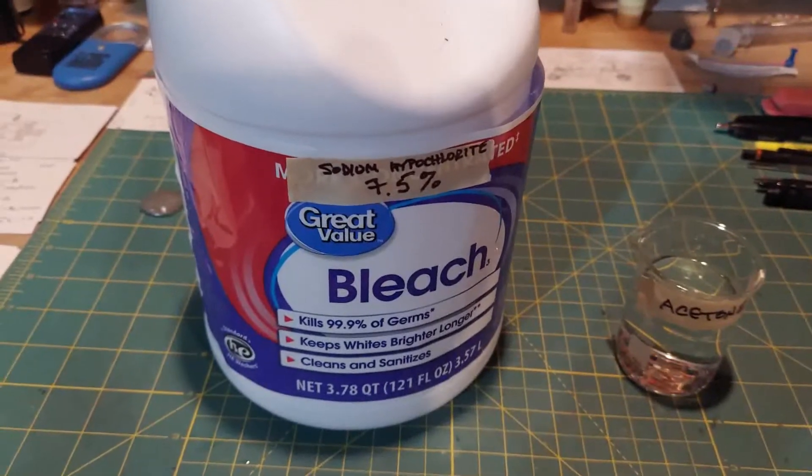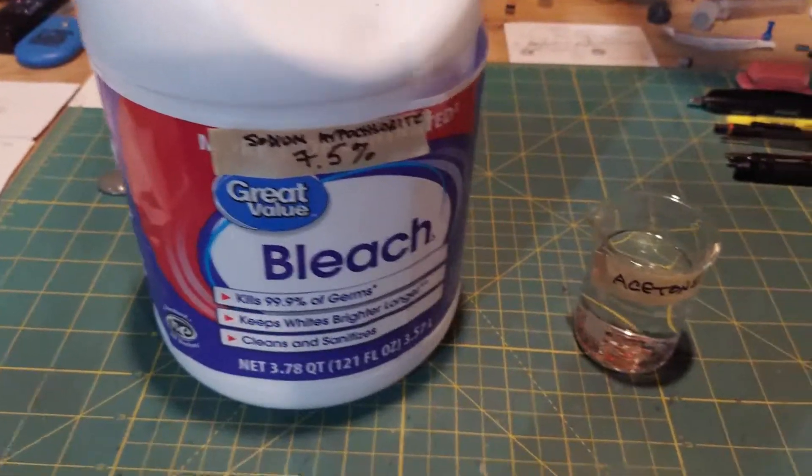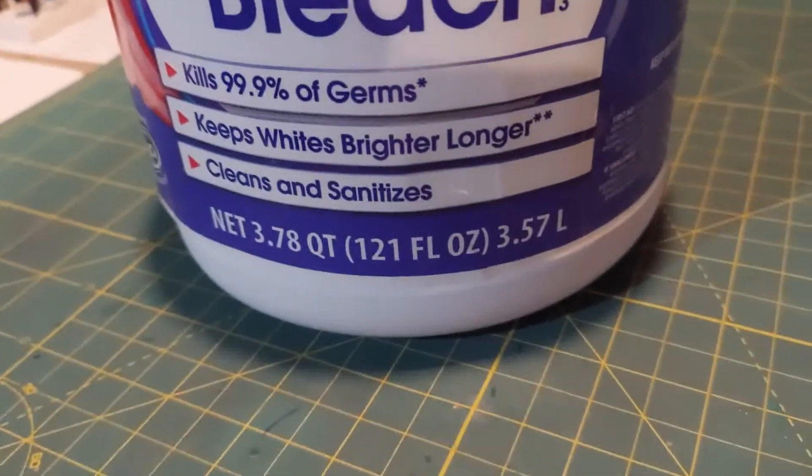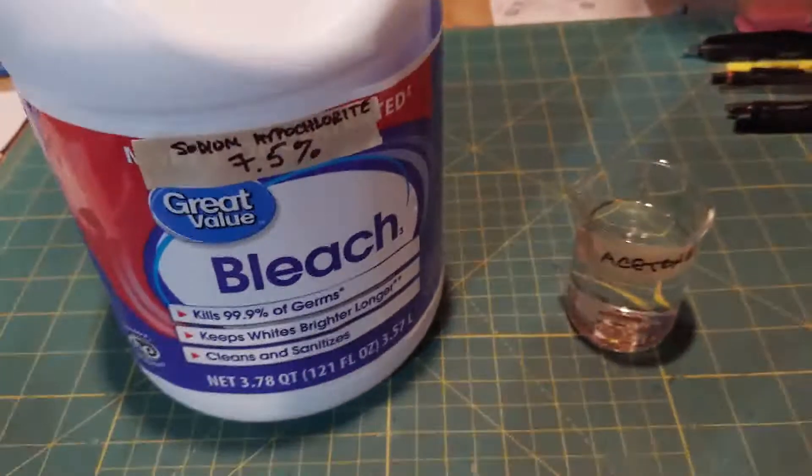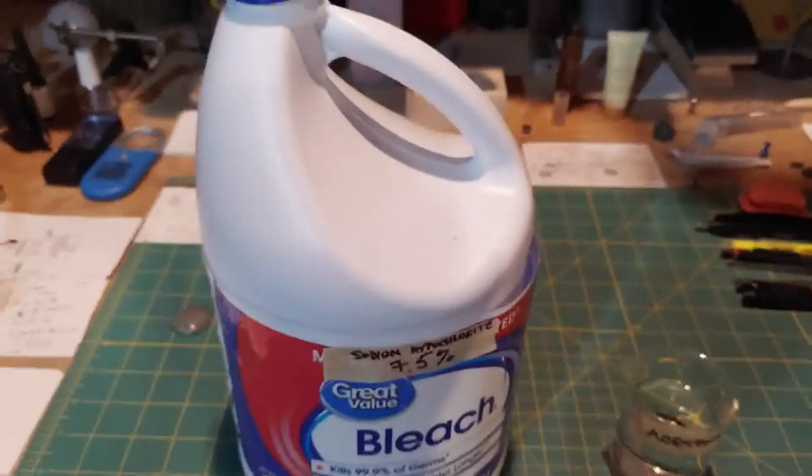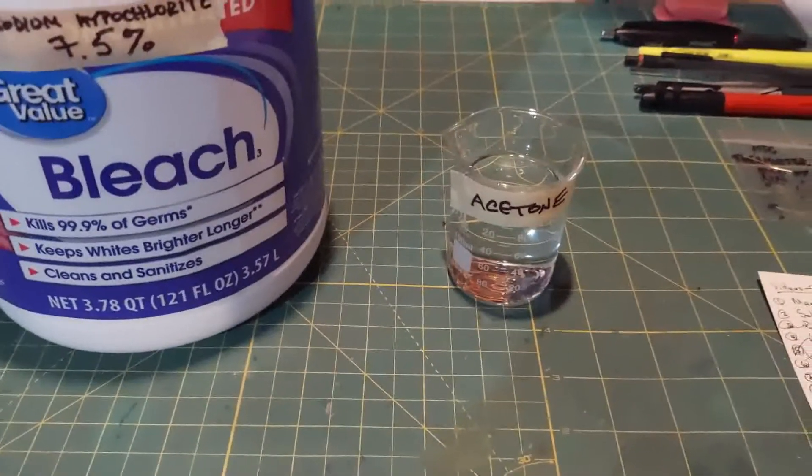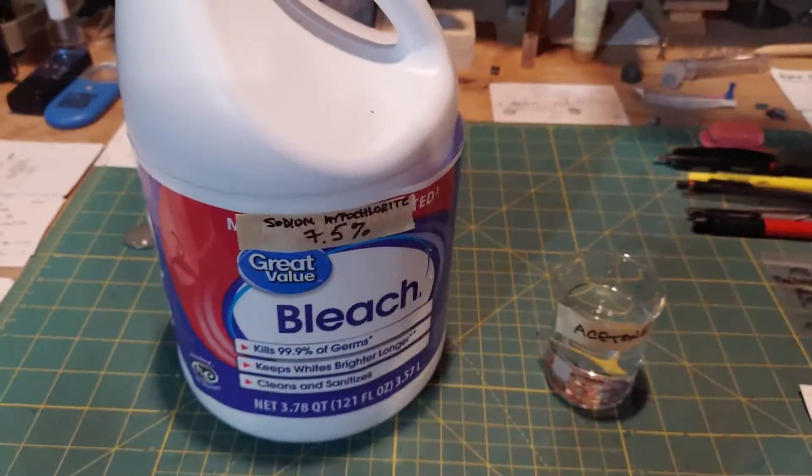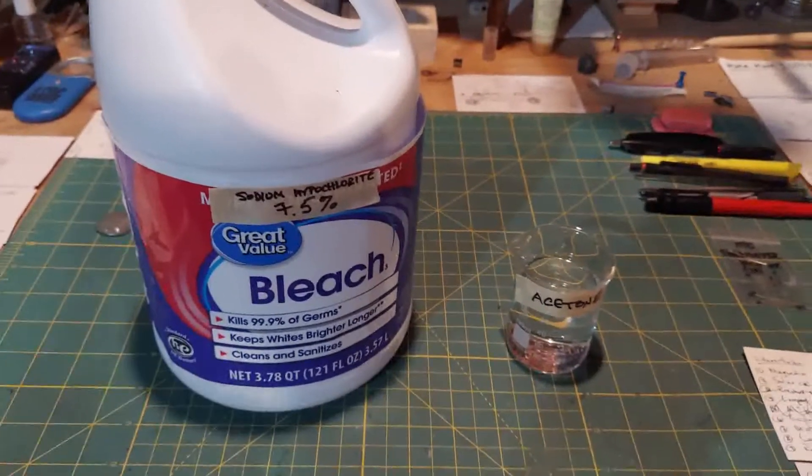This bleach is 7.5% and that matters. As far as the acetone goes, you can see here it's 3.57 or 3.6 liters. So this is the right ratio - it's a lot of bleach and only a little acetone. But the way these two react, that's what you need to do in order to end up with the best byproduct of chloroform in the end.